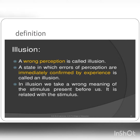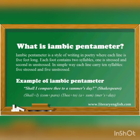Next, illusion: a wrong perception is called illusion. A state in which errors of perception are immediately confirmed by experience is illusion — it is a wrong meaning.